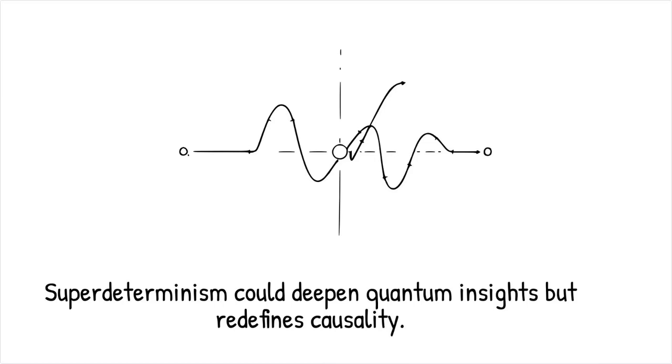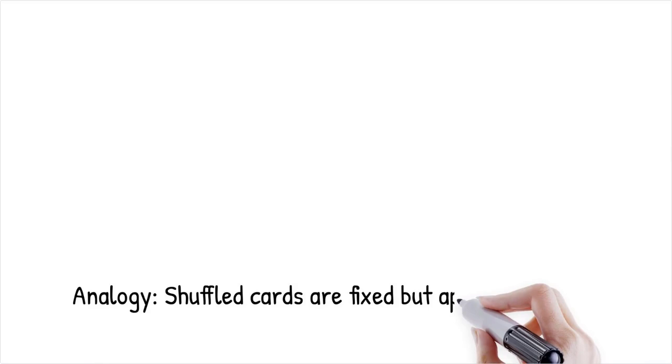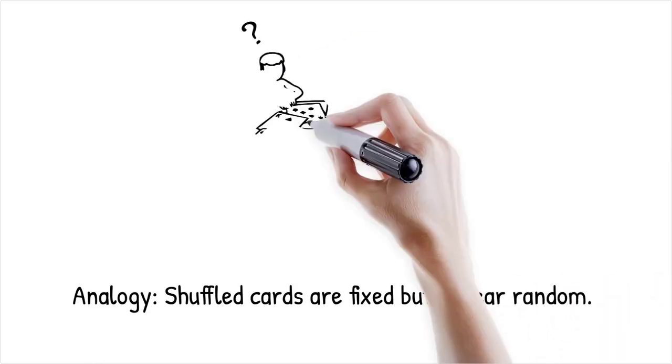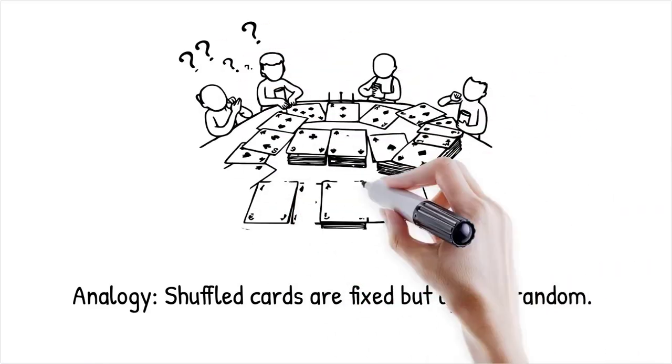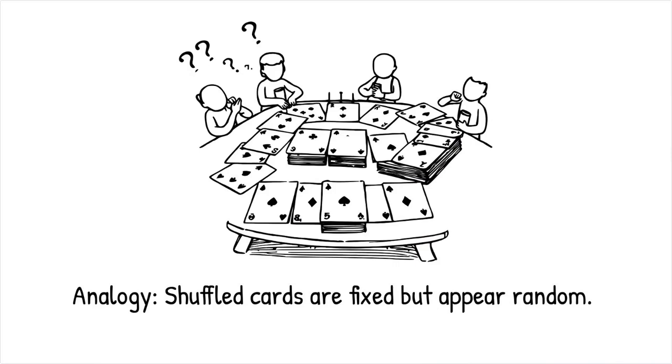Super-determinism would require modifying quantum mechanics so that wave function collapse is deterministic, removing true indeterminacy from physics. It's like claiming that a shuffled deck of cards is always in a fixed order, but appears random to players who don't know the rules governing the shuffle.